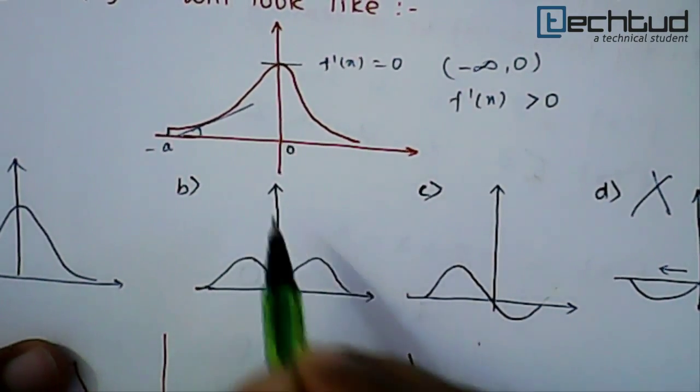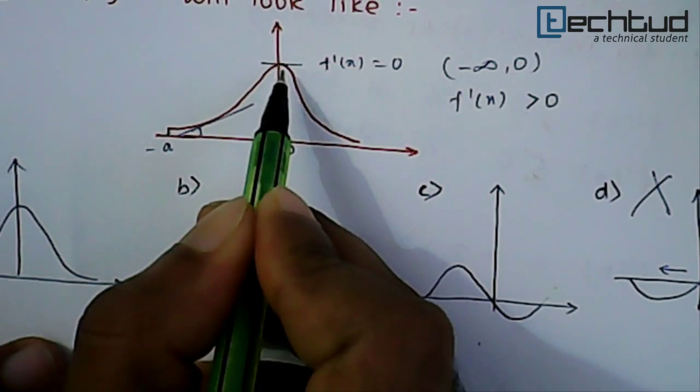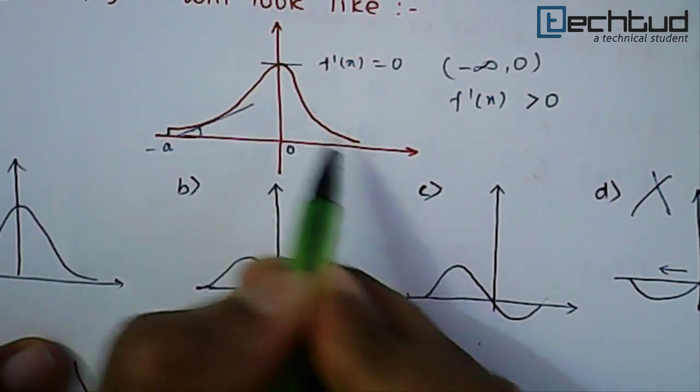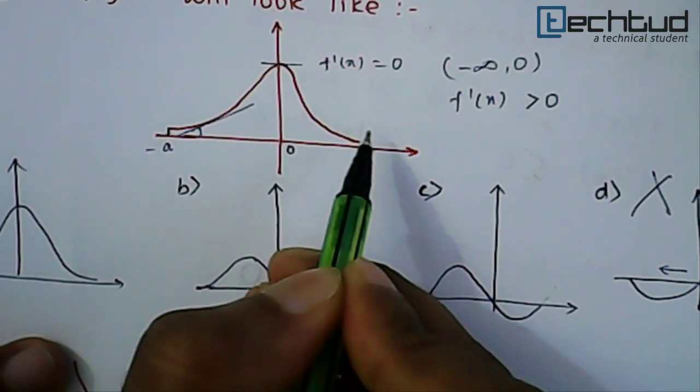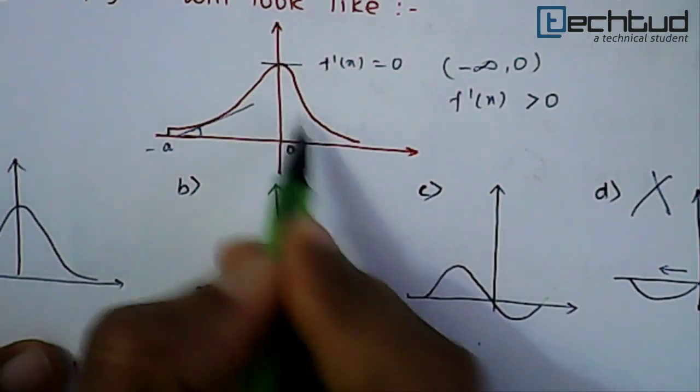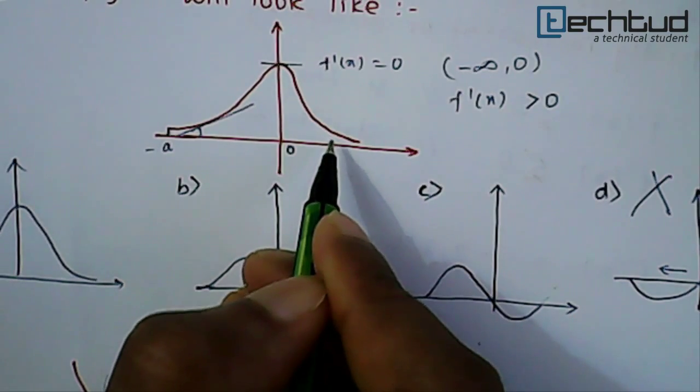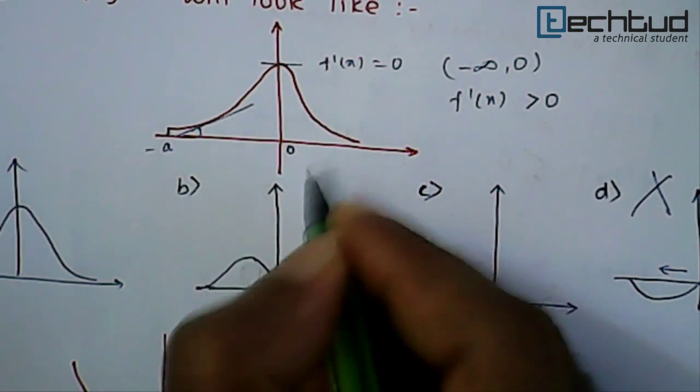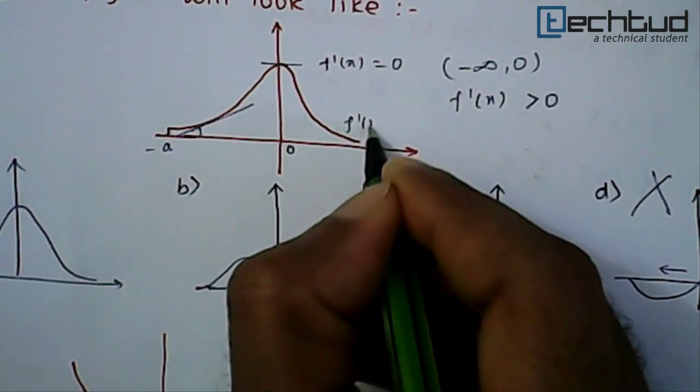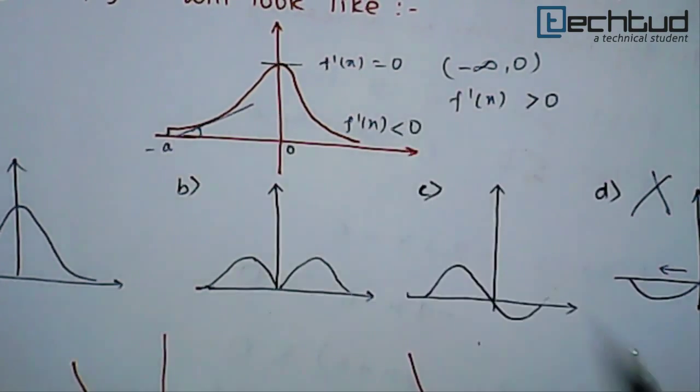Now if we check after zero and up to infinity, this curve is strictly decreasing. So strictly decreasing means f'(x) is less than zero. Here the value of f'(x) will be less than zero.